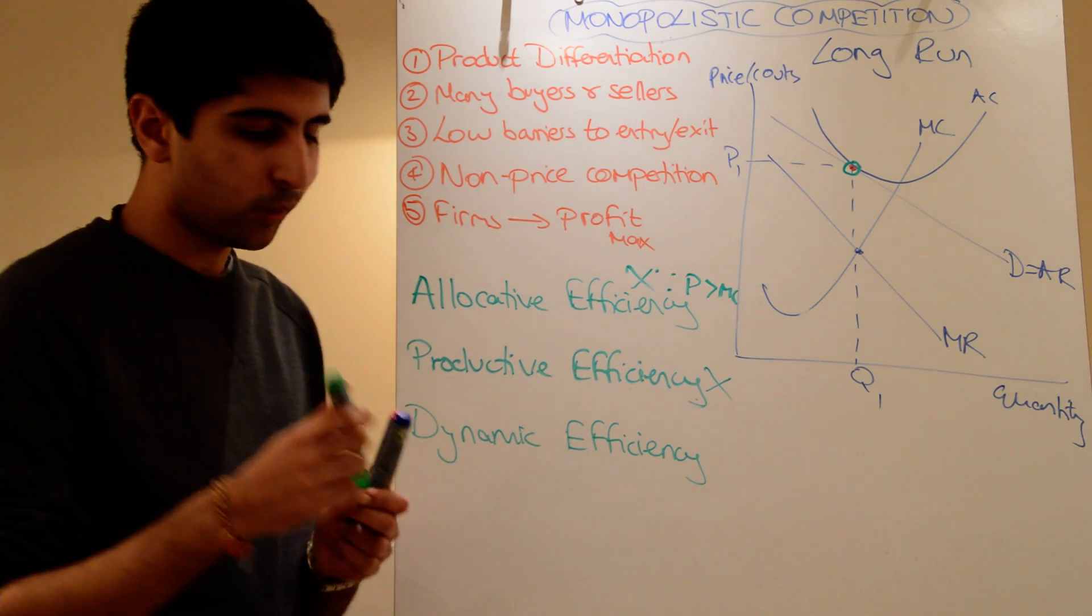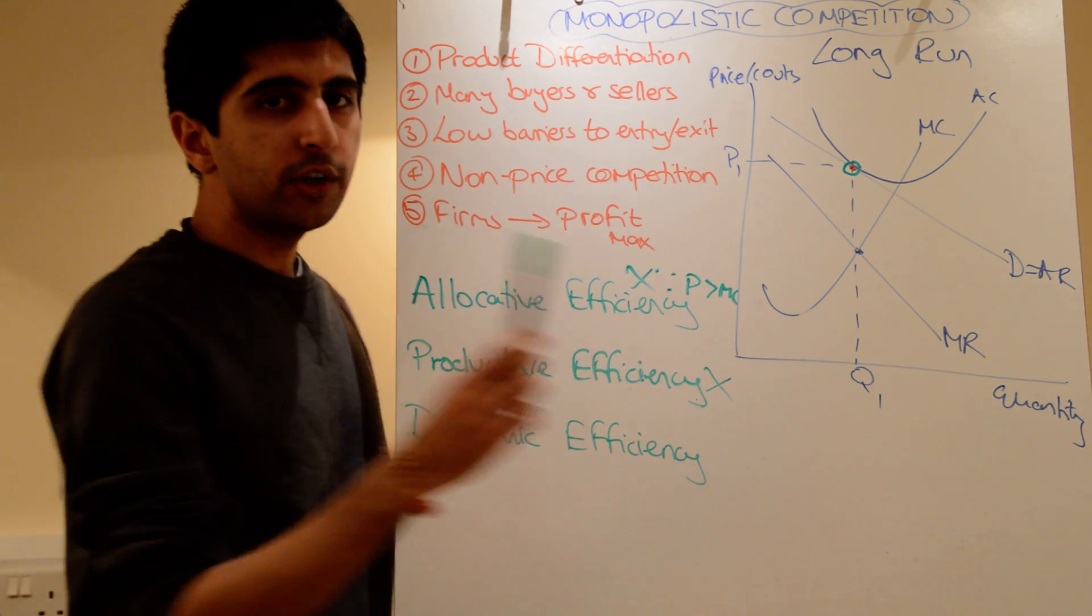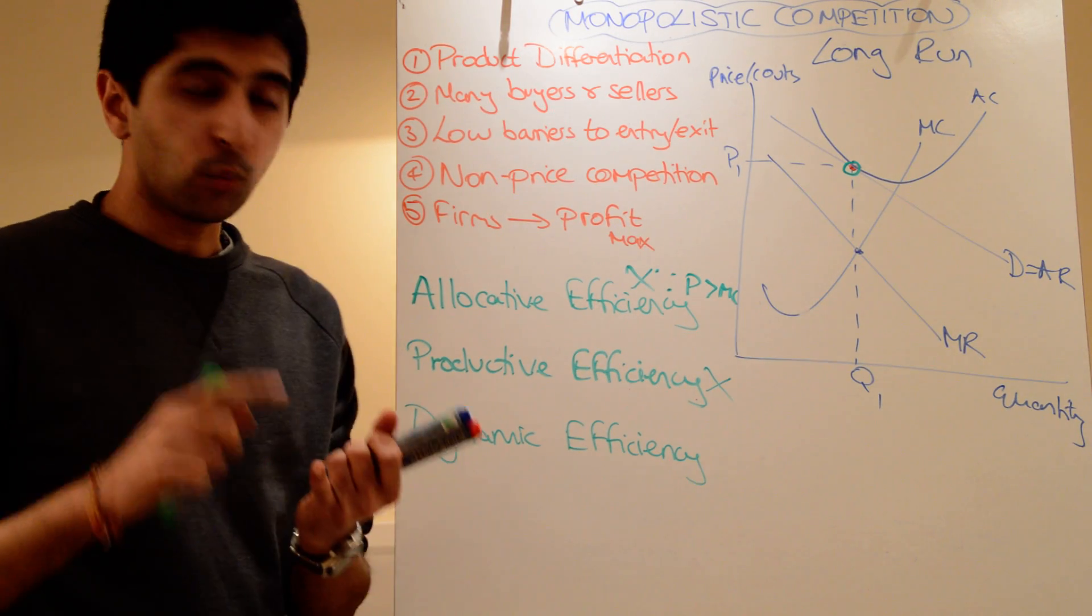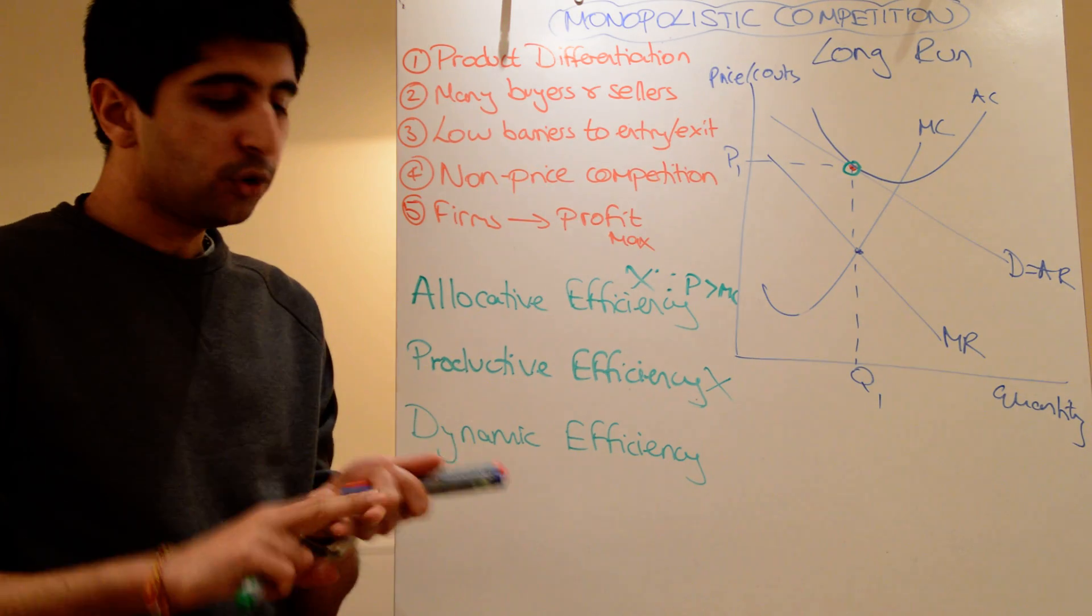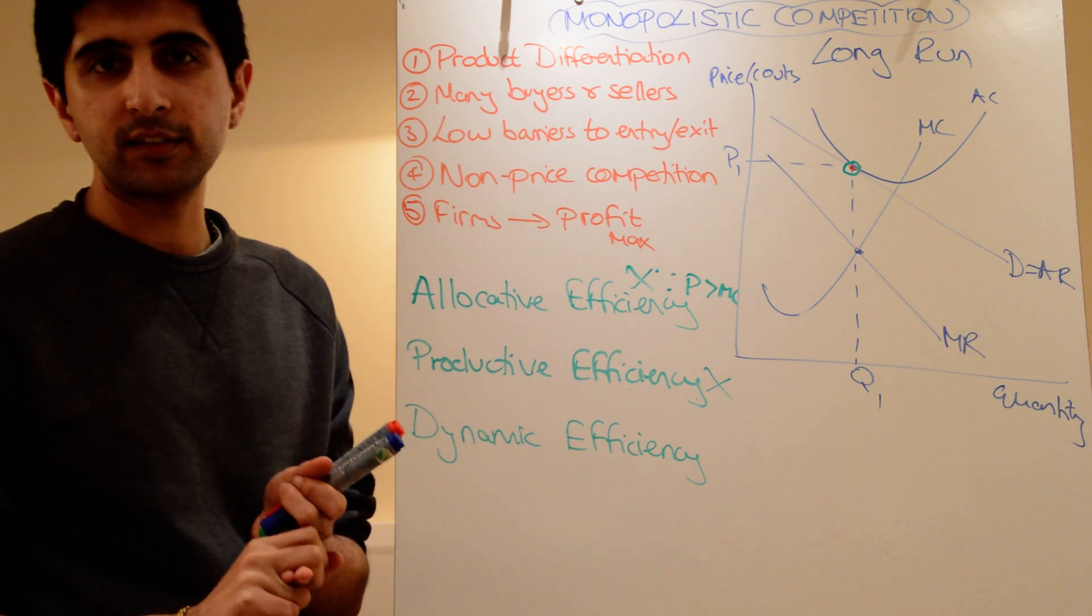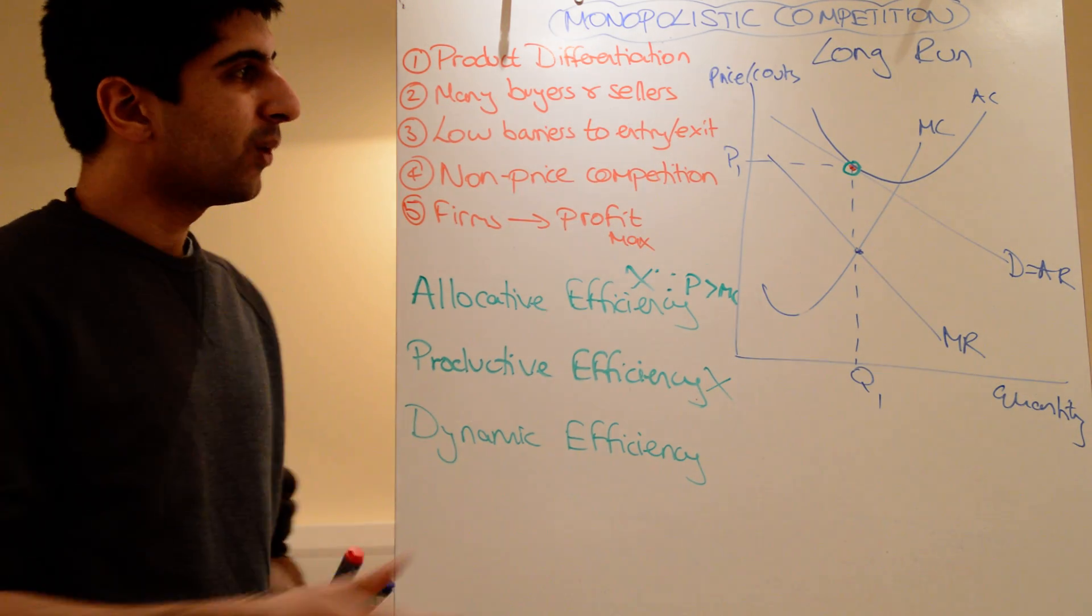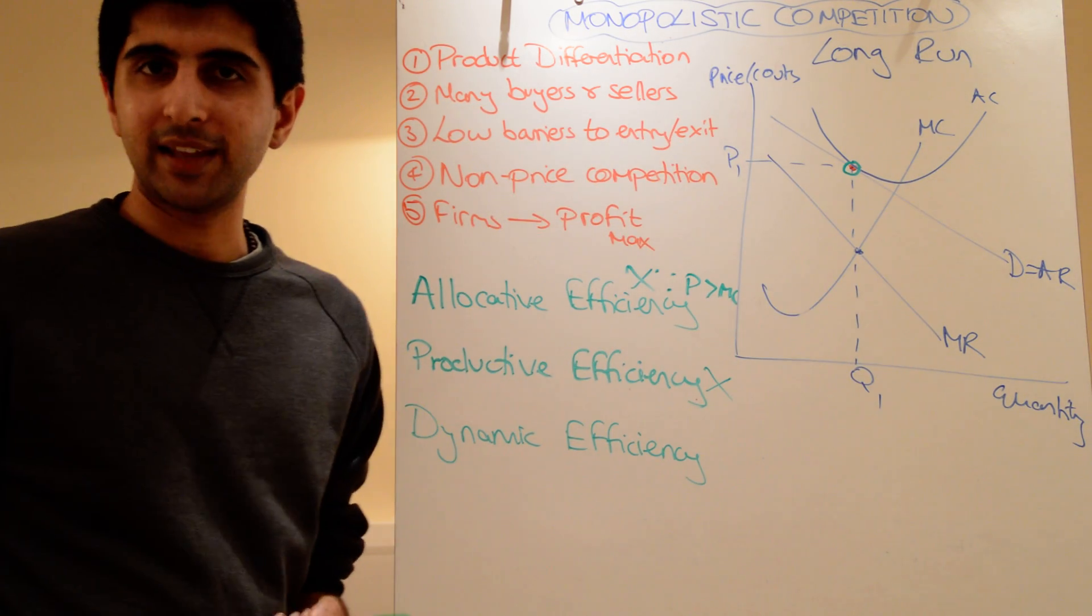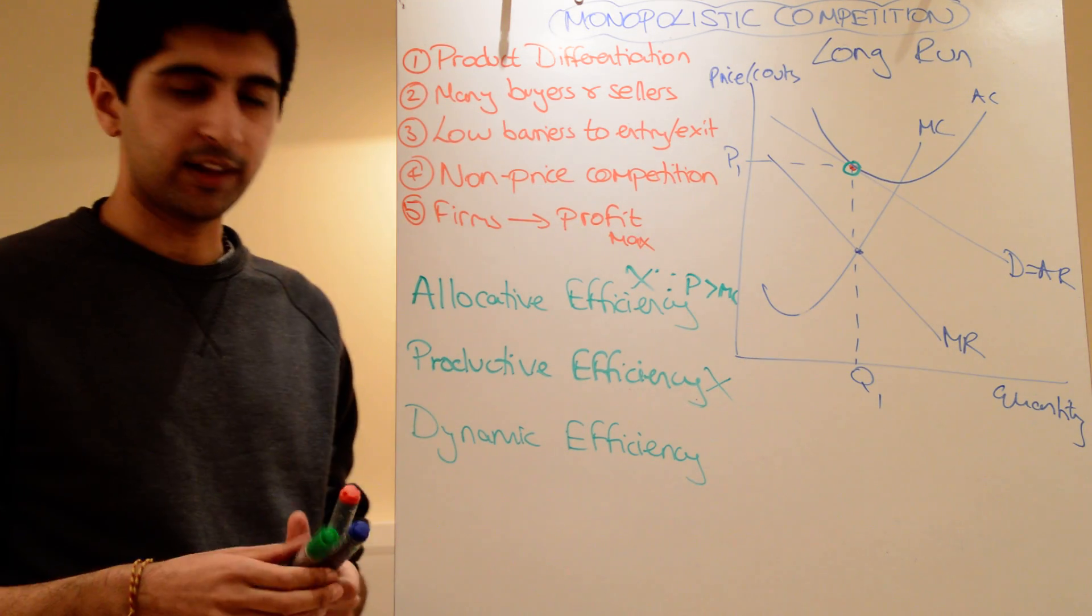Is there dynamic efficiency? Well, in the long run, there are only normal profits being made. In the short run, yes, there were supernormal profits being made. But one, they weren't substantial. And two, even if these firms did reinvest and produce new products and innovate, well, simply because of low barriers to entry, it would just signal more firms to get into the market. So really, there isn't an incentive to do so like that.